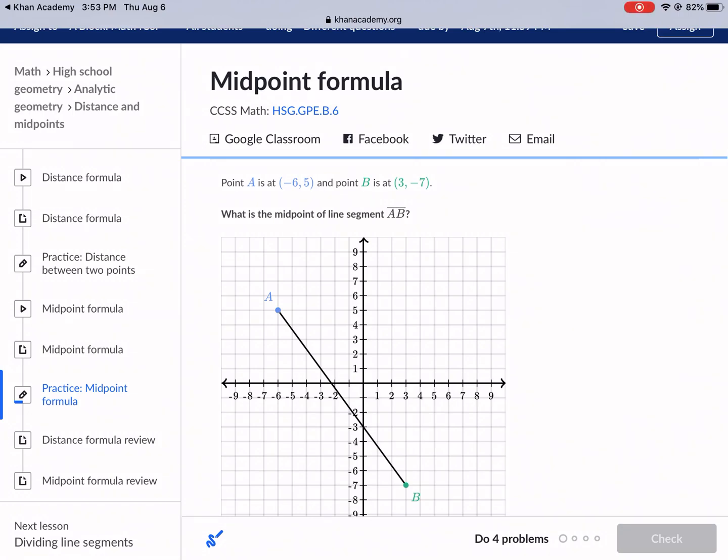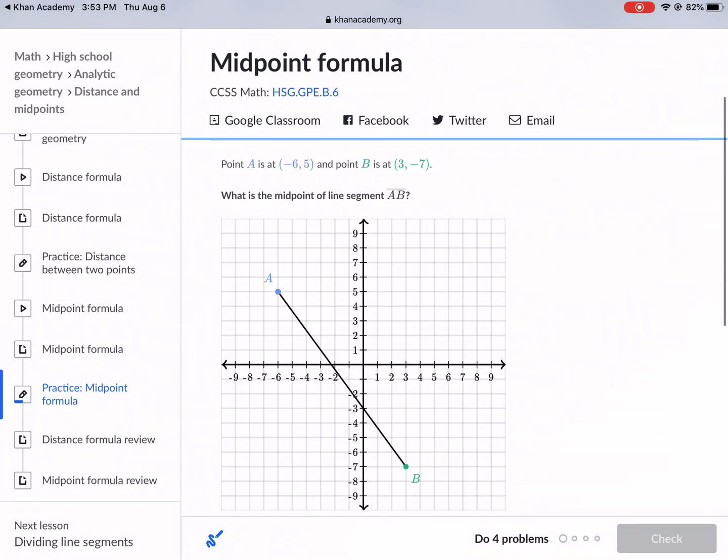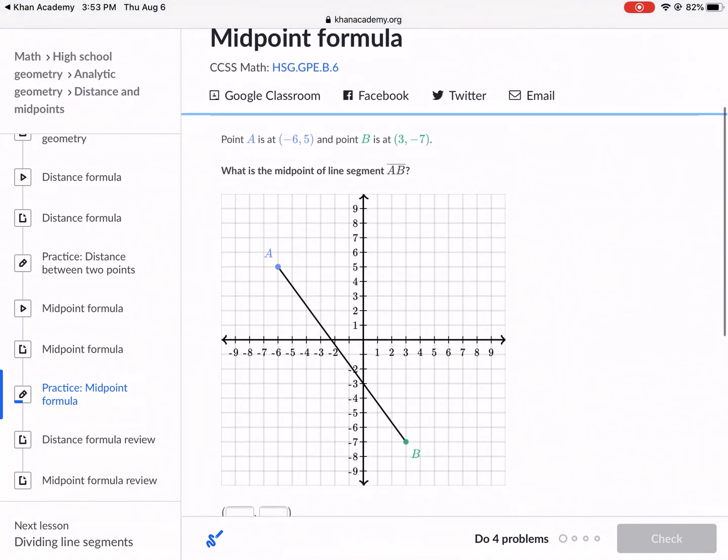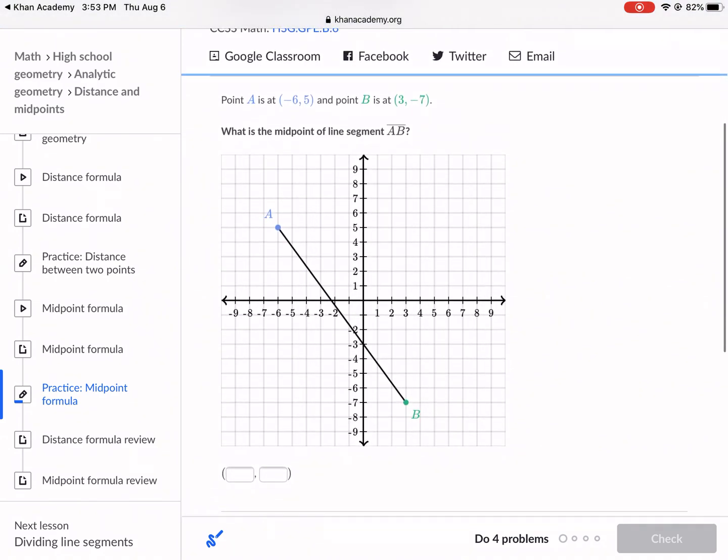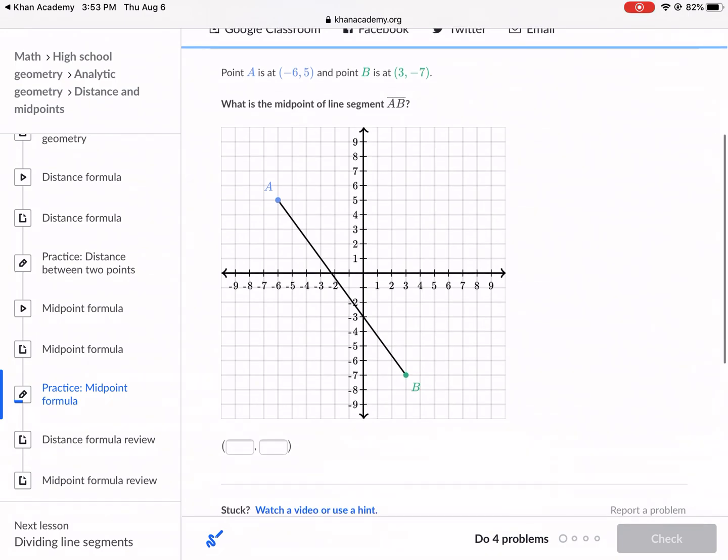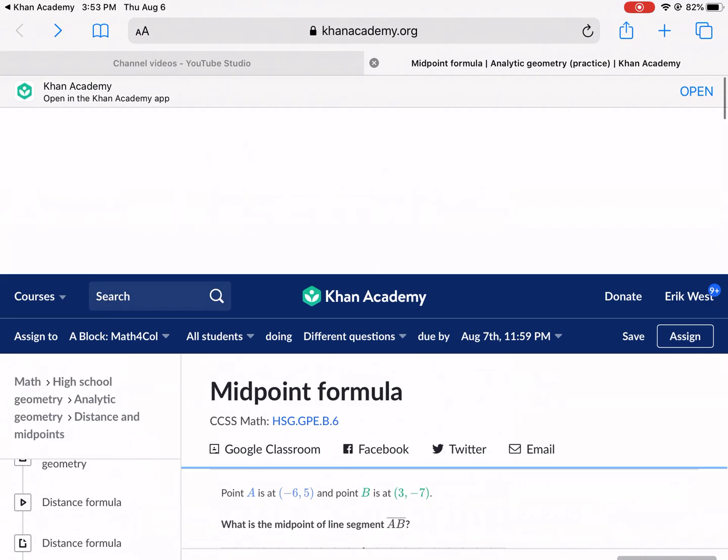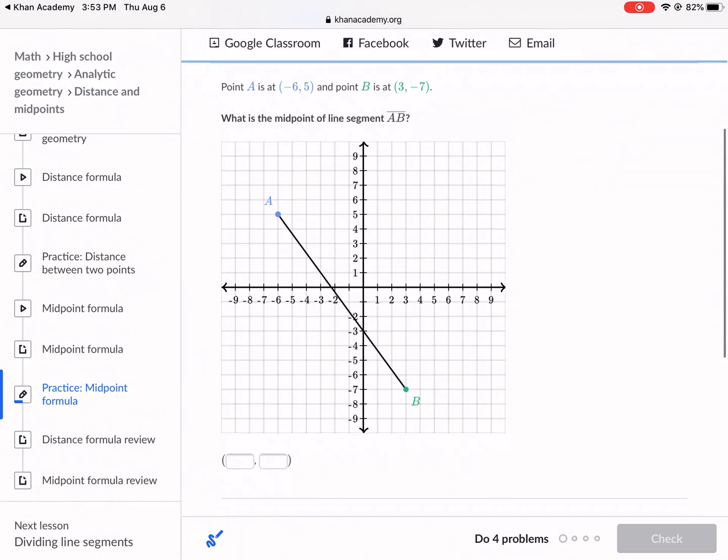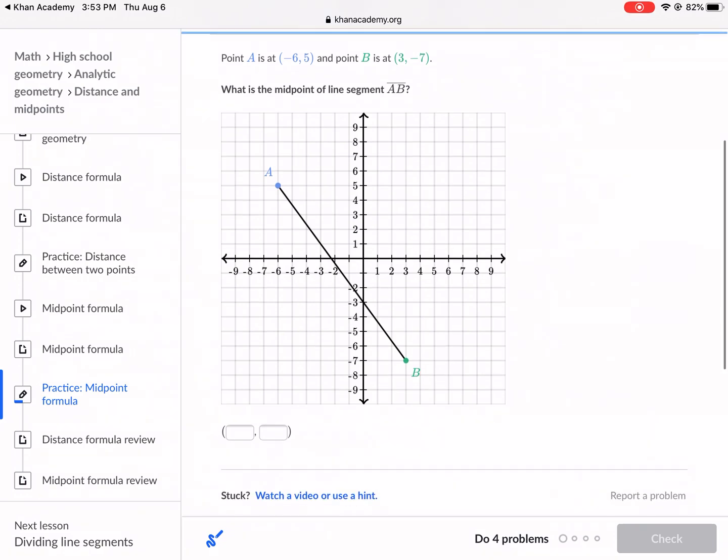Welcome everyone to another Khan Academy tutorial. We're going to be talking about the midpoint formula today. For all those geometry or algebra students that need help with some coordinate midpoints, we'll talk about that right now. Our first problem is: point A is at negative 6, 5 and B is at 3, negative 7. What is the midpoint of line segment AB?